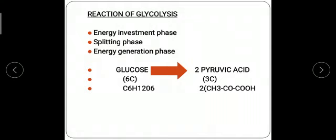Second phase is splitting phase. This is the second phase in the process of glycolysis which involves breakdown of a compound into two molecules. Third is the energy generation phase or payoff phase, which produces the final molecule products.